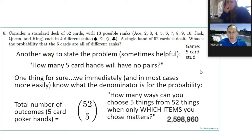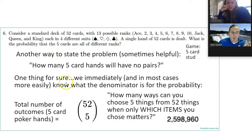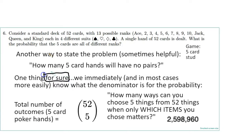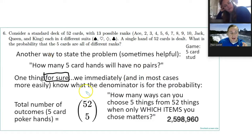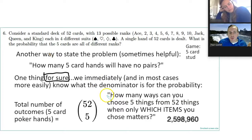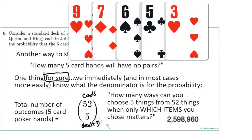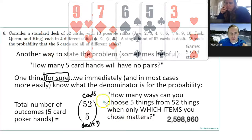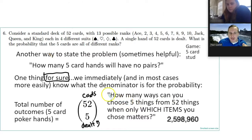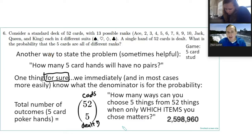Start off easy. In most cases we know the denominator more easily, because the denominator is just the total number of ways. If you have 52 cards and five are dealt to you, the total number of ways to get five cards is 52 choose 5. It's how many ways you can choose five things from 52 things when only the items matter — order doesn't matter.